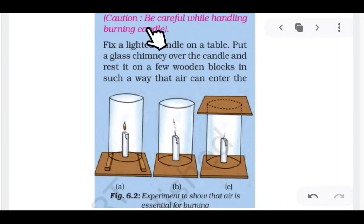Now we have another activity here. Caution: be careful while handling the burning candle. Now what you have to do? See this figure A, figure B, and figure C. Experiment to show that air is essential for burning. How do you prepare this experiment? Fix a lighted candle on a table. Put a glass chimney, it should be open here and open the glass chimney. Glass chimney over the candle and rest it on a few wooden blocks. Put a wooden block behind it and put a chimney on it.